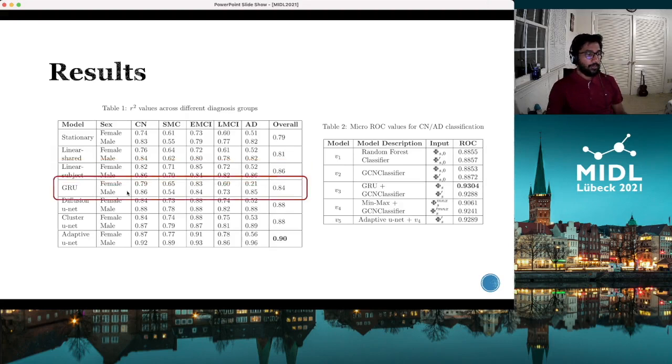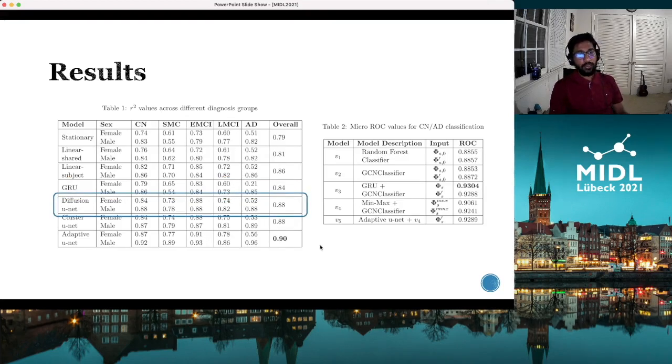Next we try gated recurrent unit, which is a recurrent neural network model. And interestingly, it is outperformed by the linear model. We think this is because our data is very limited, noisy, and heterogeneous. This unrestricted neural network kind of finds it hard to generalize to different kinds of data. On the other hand, our model, which is a diffusion unit, kind of finds a balance between those two, where it uses the power of neural network but it also restricts the search space to be a heat diffusion process. In this way, it can outperform both of these techniques.